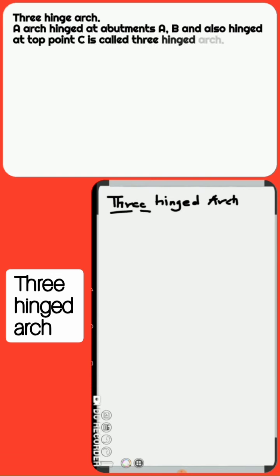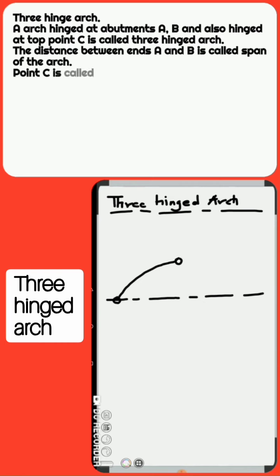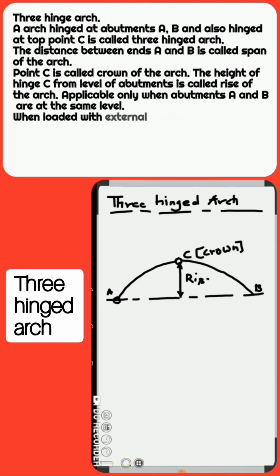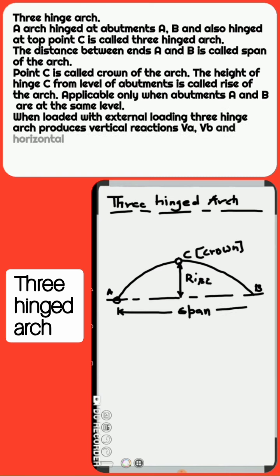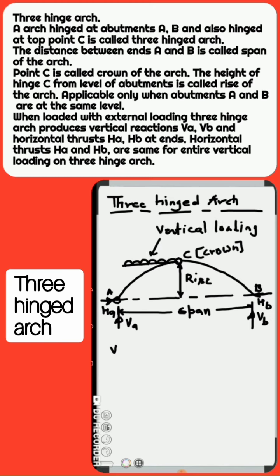A 3-Hinged Arch is an arch hinged at abutments A and B and also hinged at top point C. The distance between ends A and B is called the span of the arch. Point C is called the crown of the arch. The height of hinge C from the level of abutments is called the rise of the arch. It is applicable only when abutments A and B are at the same level when loaded with external loading.